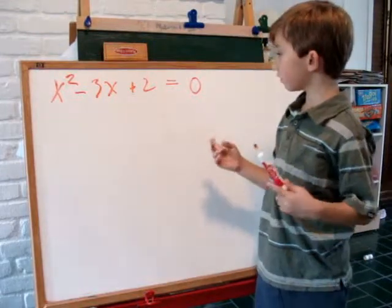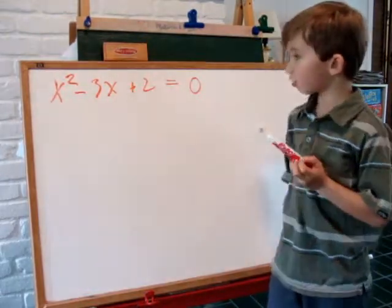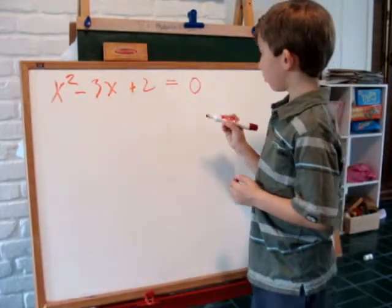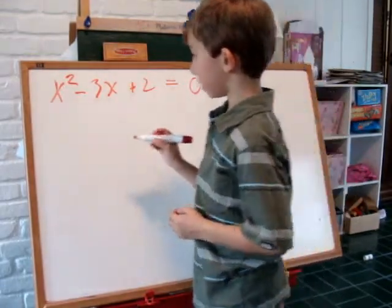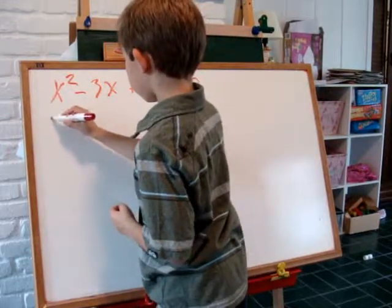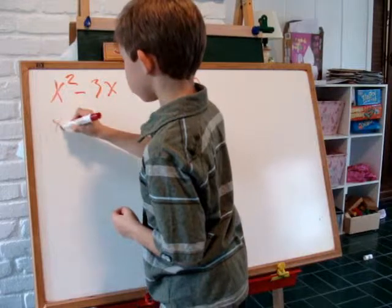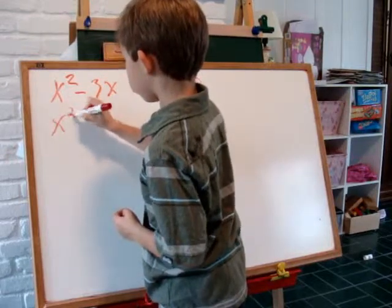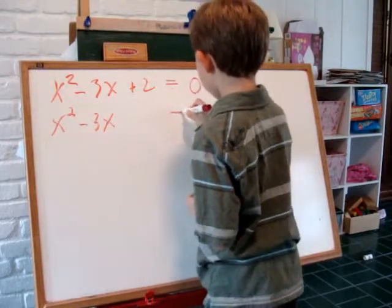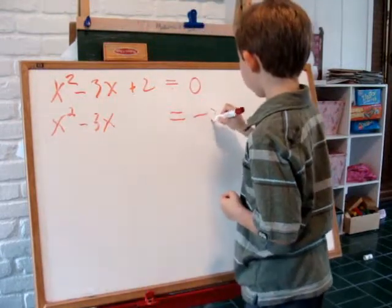Now we're going to solve this equation by completing the square. First, we take the constant term and move it to the right. We get x squared minus 3x equals negative 2.